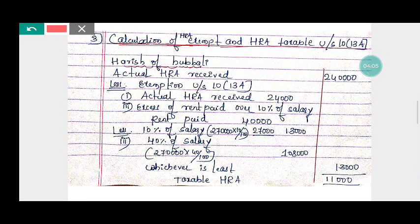Calculation of HRA exempted and HRA taxable under Section 10 sub-section 13A. First, for Harish of Hubbali: actual HRA received — how much did he receive? He received HRA of Rs 24,000.